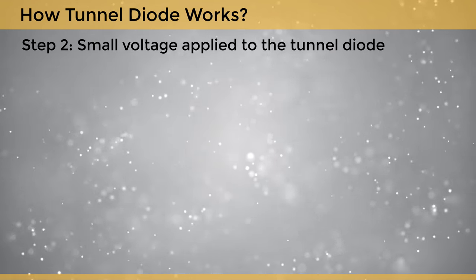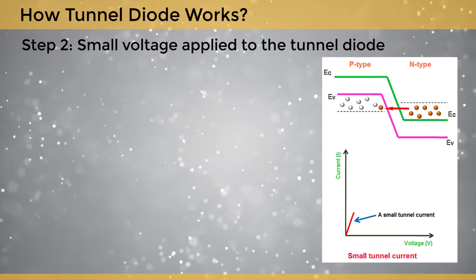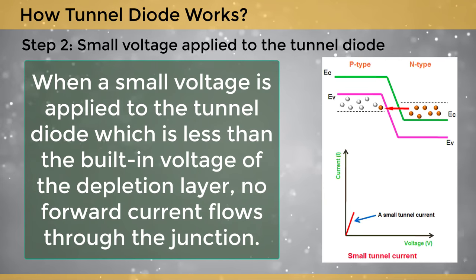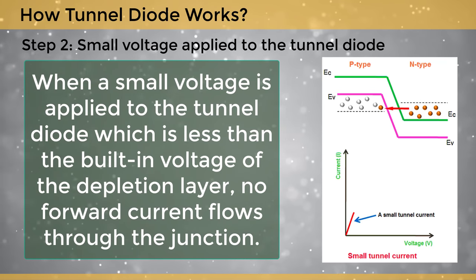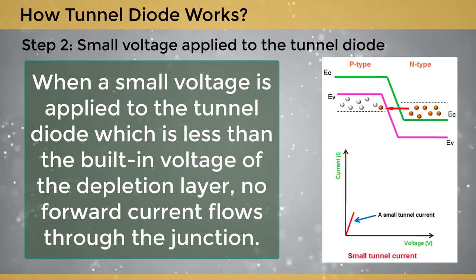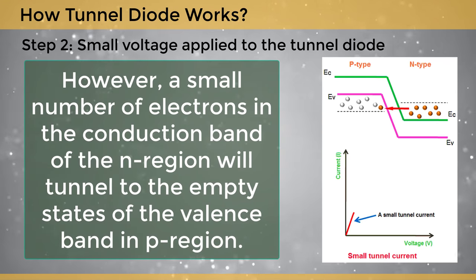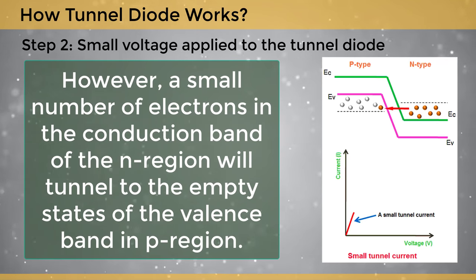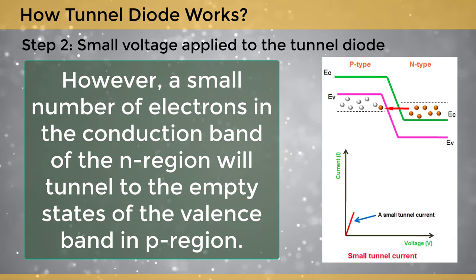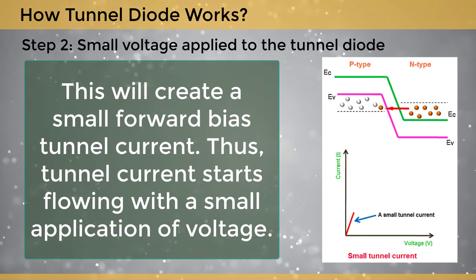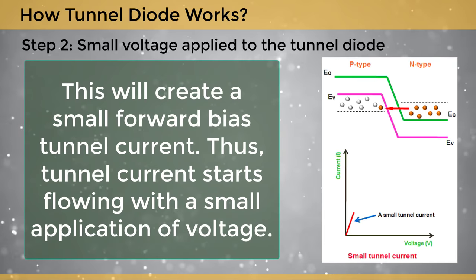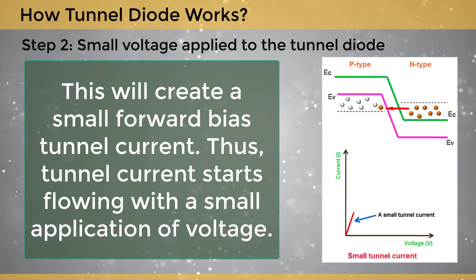Step 2: Small voltage applied to the tunnel diode. When a small voltage is applied to the tunnel diode, which is less than the built-in voltage of the depletion layer, no forward current flows through the junction. However, a small number of electrons in the conduction band of the n-region will tunnel to the empty states of the valence band in the p-region. This creates a small forward bias tunnel current, and thus tunnel current starts flowing with a small application of voltage.